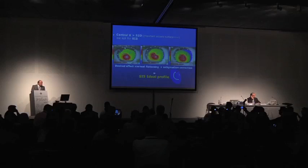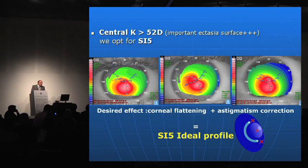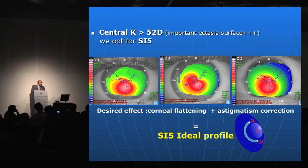When we have an advanced stage of keratoconus, as in this topographic example, we have a large surface of ectasia which reaches the center of the cornea. Here the desired effect is central corneal flattening and astigmatism correction. So in this case, the only choice is SI5, which is the ideal profile.